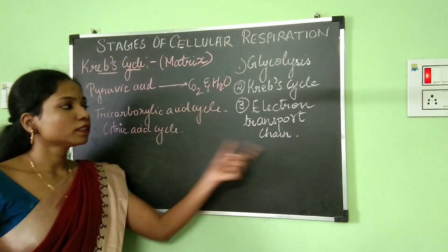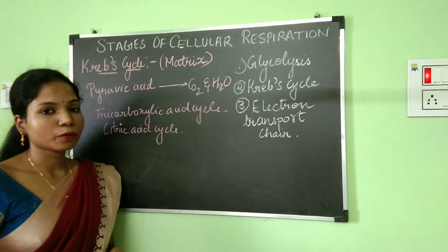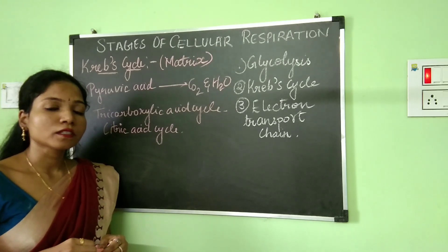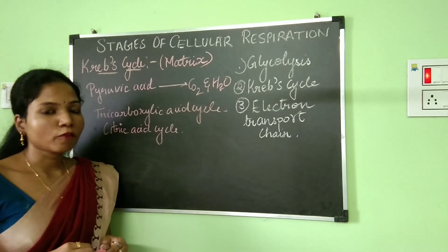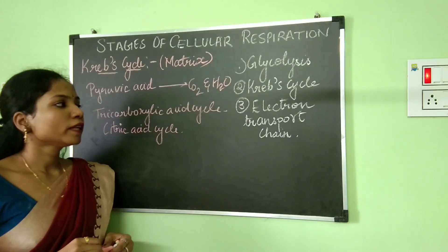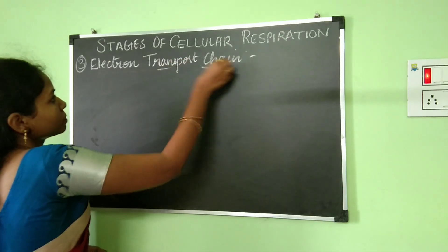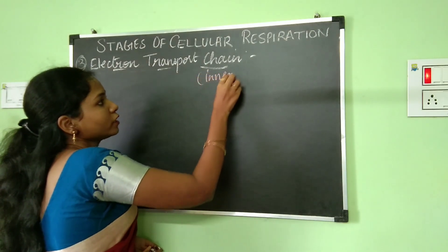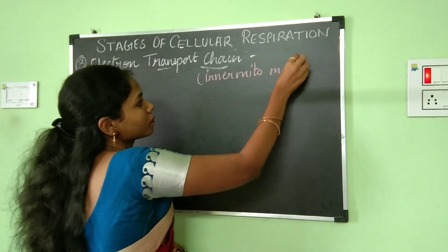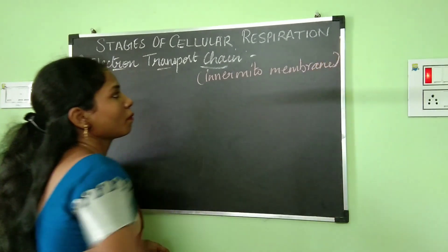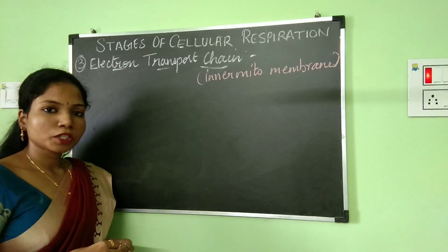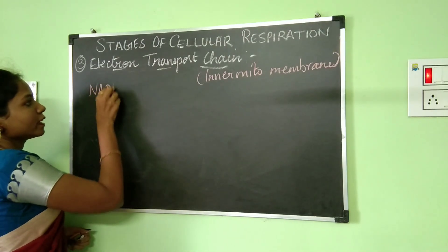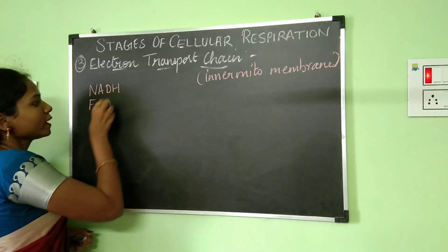Now let's go on to the last stage of cellular respiration, which is the electron transport chain. This stage is very important because during the electron transport chain, the synthesis of the energy currency adenosine triphosphate, or ATP, is going to take place. Before we go on to the electron transport chain, there are two very important compounds we need to discuss: the first one is NADH and the second one is FADH2.